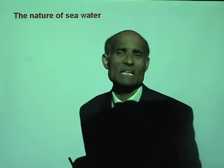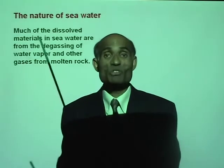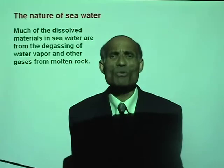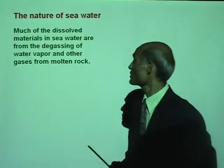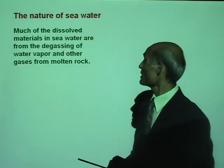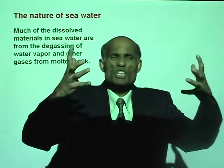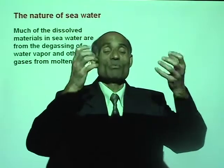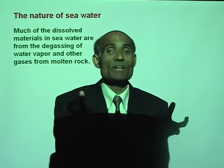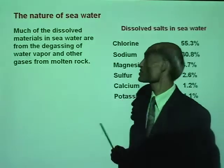What is the nature of sea water? What is the difference between sea water and fresh water? Sea water has a lot of dissolved minerals in it. Much of the dissolved minerals in sea water are from degassing of water vapor and other gases from molten rock. When the Earth solidified from its molten state, gases were allowed to escape when the lava finally solidified. All those materials are dissolved in the seawater.